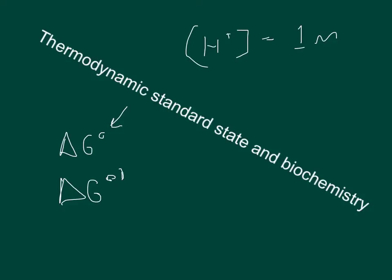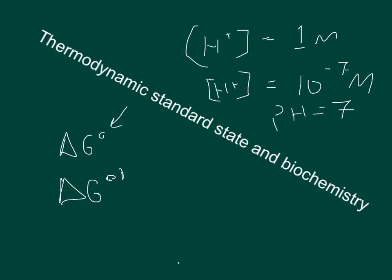The standard state for hydrogen in biochemistry is equal to 10 to the minus 7th molar, which is a pH equal to 7 — neutral pH. If you've taken a physiology class, you know that the pH of the body is approximately 7.35 to 7.45. If it goes below 7.35, the body is considered in acidosis; if it goes above 7.45, it's considered alkalosis.